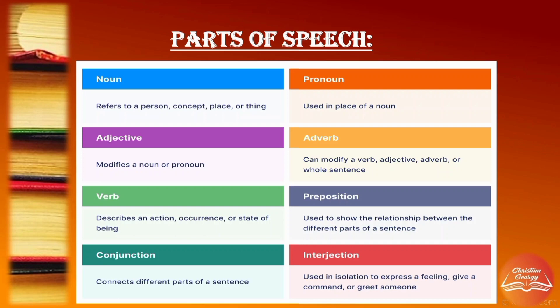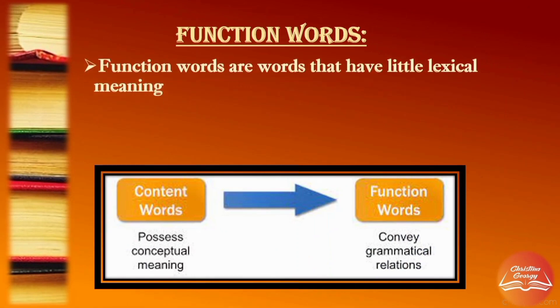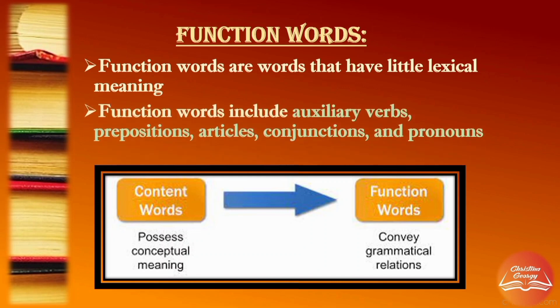So what about conjunctions, prepositions, interjections, and pronouns? All these would be part of function words. In simple terms, function words are words that have little or no lexical meaning — that is, they individually do not possess any particular meaning as such. These function words include auxiliary verbs such as is, are, am, etc.; prepositions such as on, at, in, etc.; articles such as a, an, the, etc.; conjunctions such as and, but, so, etc.; and pronouns. Content words are those words that possess conceptual meaning, whereas function words are those words that convey grammatical relations.